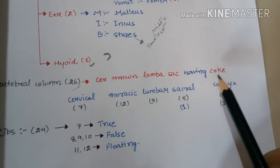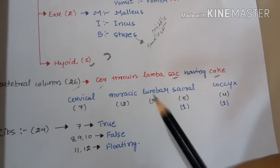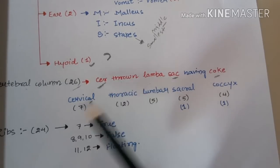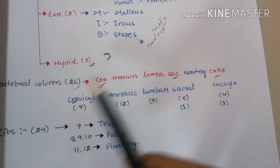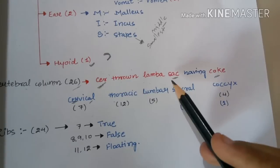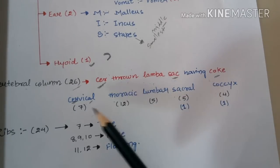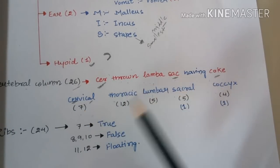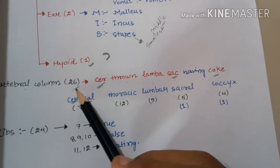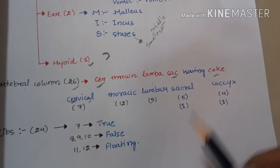To memorize the vertebral column, use the trick: 'Sir thrown lamba sack having coke.' Sir means Cervical, Thrown means Thoracic, Lamba means Lumbar, Sack means Sacral, and Coke means Coccyx. These are 7, 12, 5, 5, and 4 in number respectively. Since sacral and coccyx bones are fused to make single bones each, the total count becomes 26: 7 + 12 + 5 + 1 + 1 = 26.